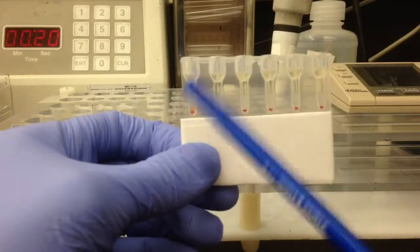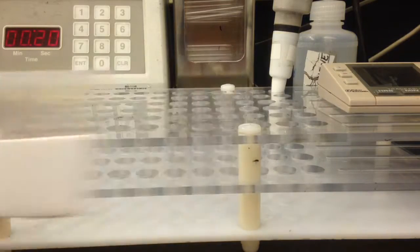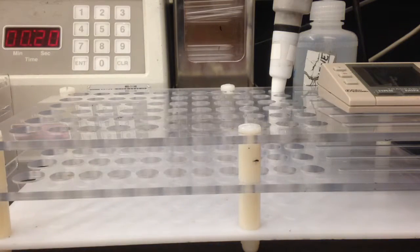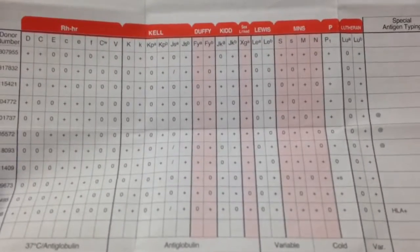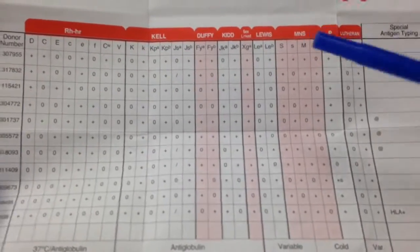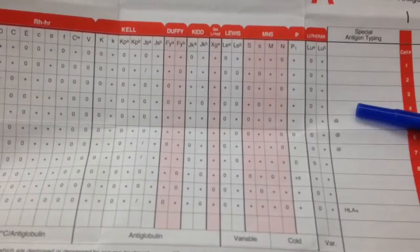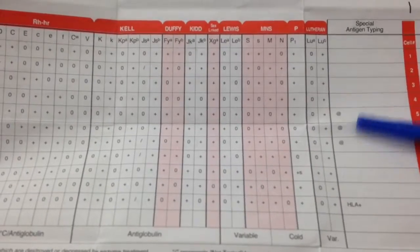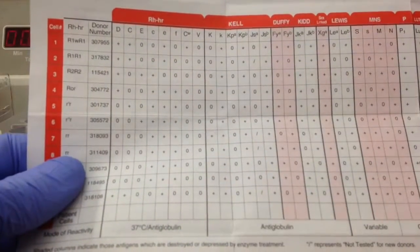Here's an example I have. The first three cells on the left were for my antibody screen, and the first two were about a 1+. In this case, it was a labor and delivery patient. I called, and they told me when they received RhoGAM, so I know that it wasn't an anti-D.